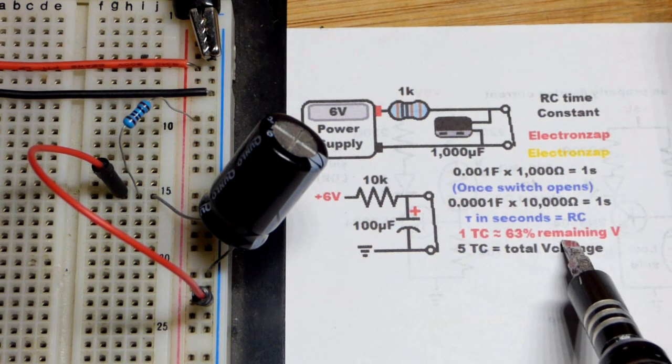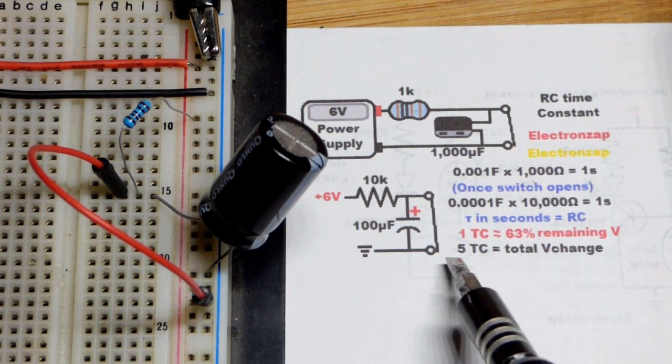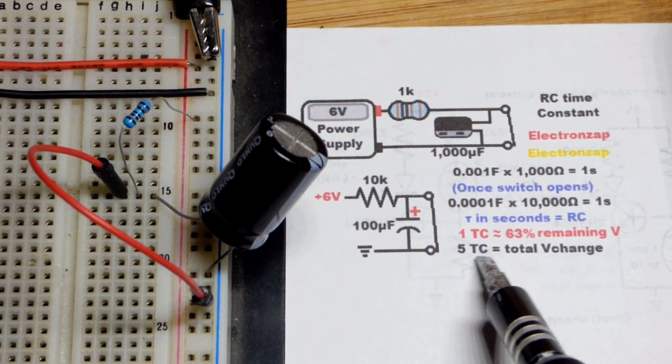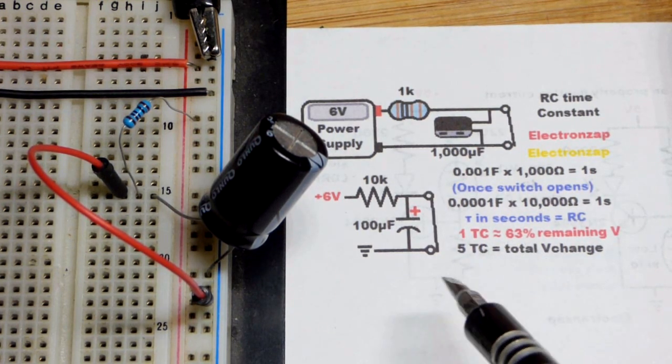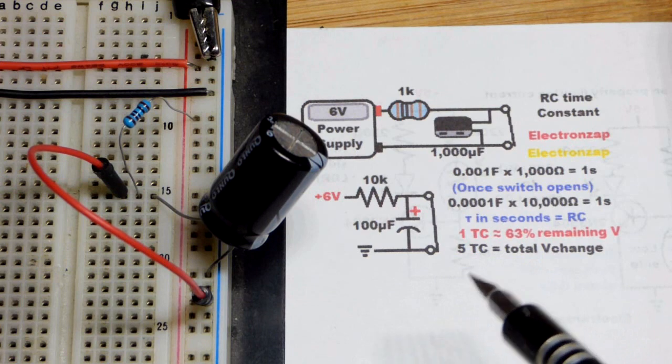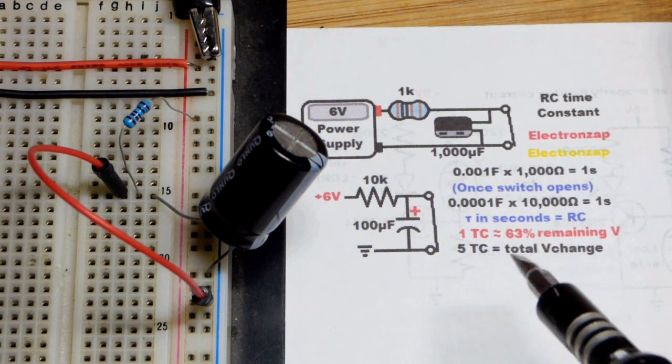To make it easier, we're going to round it off to about two-thirds right there. And so the next time constant that you got, you're going to get about 63% of what's left.